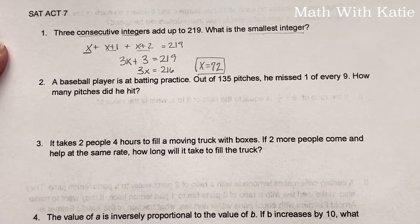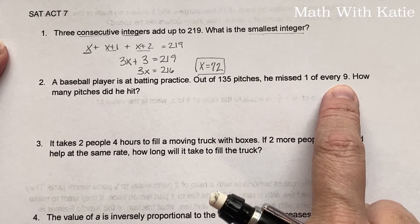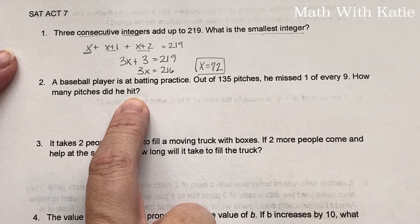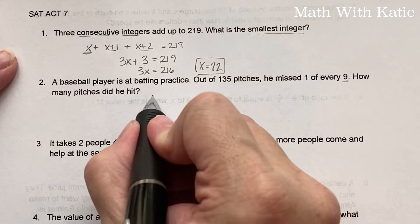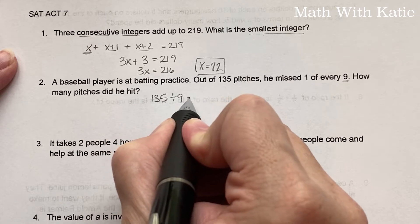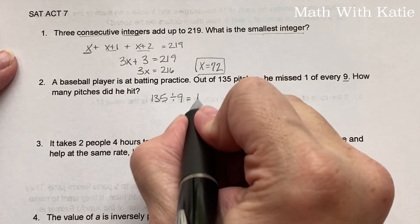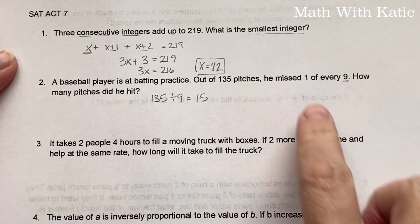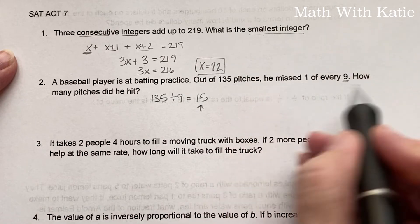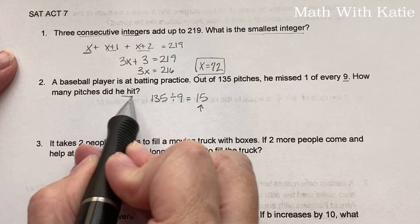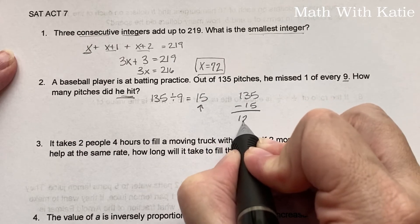A baseball player is at batting practice. Out of 135 pitches, he missed one of every nine. How many pitches did he hit? So if they're in a cycle of nine, 135 divided by 9 is 15. So he missed one of every nine, which means he missed 15. So now how do we find out how many he actually hit? 135 minus 15 equals 120.